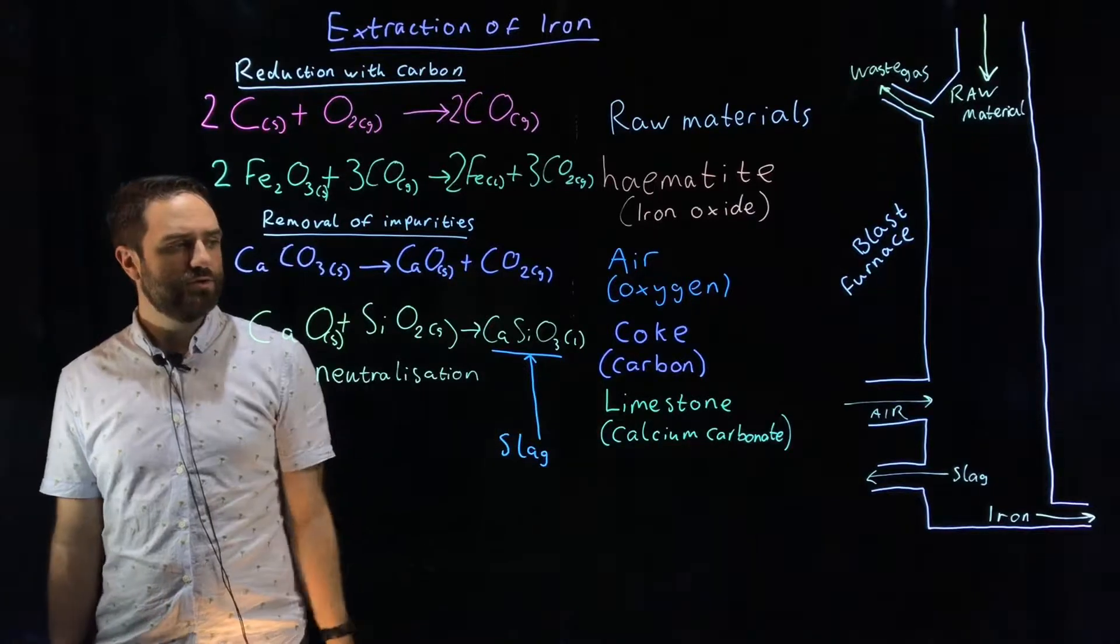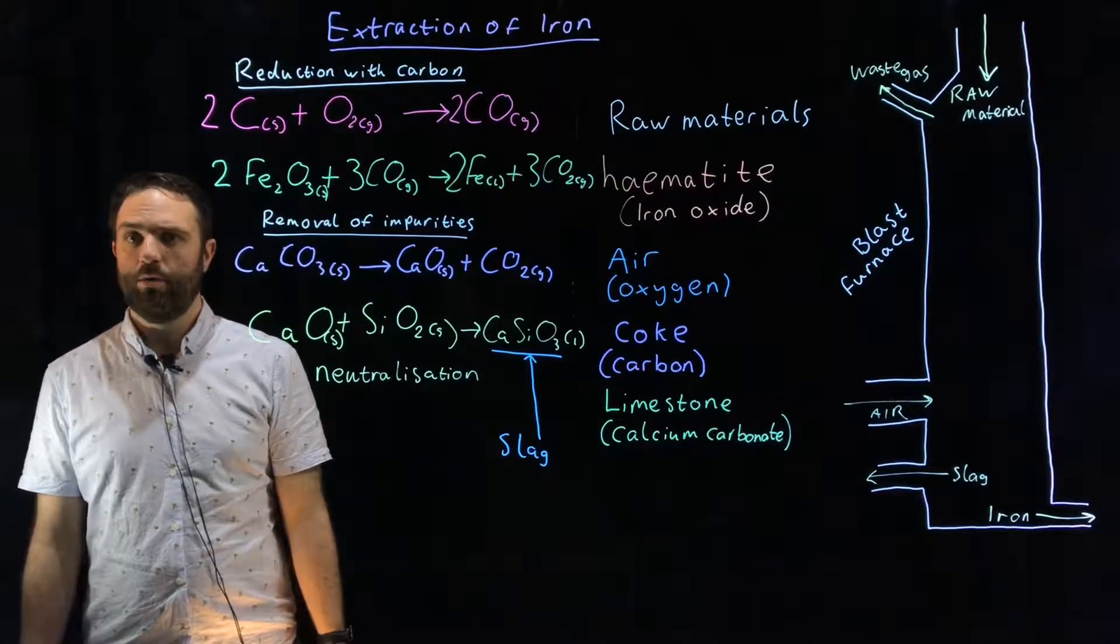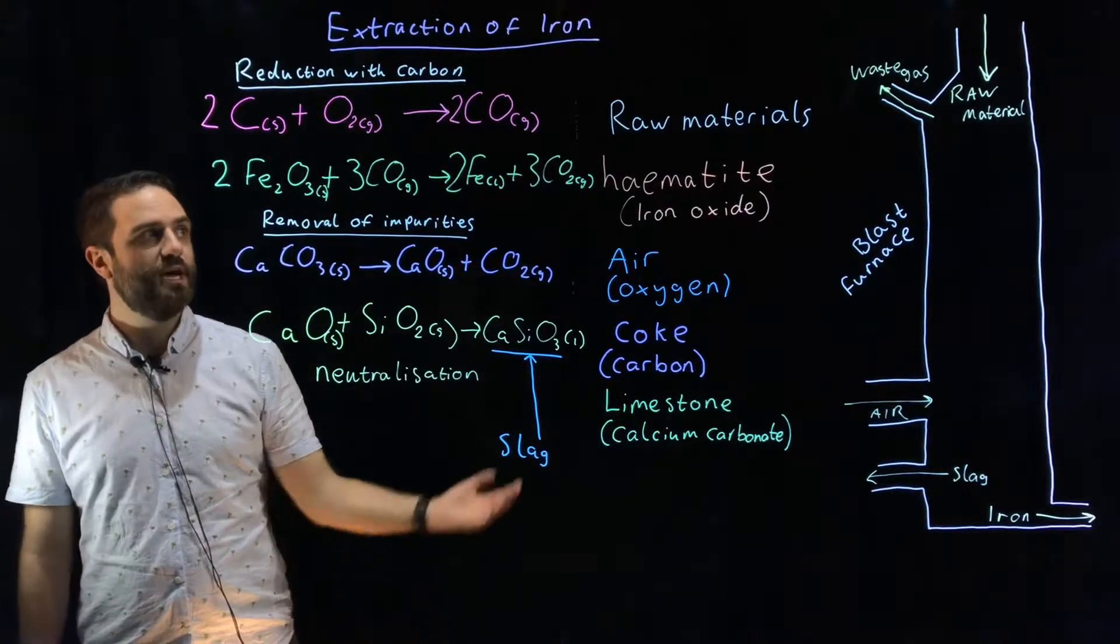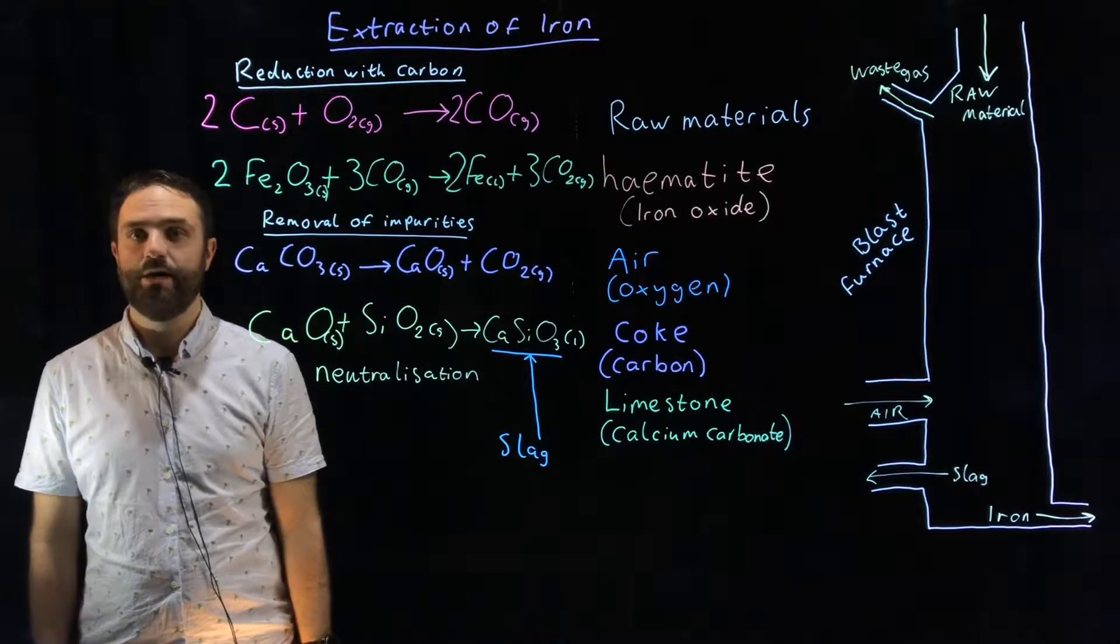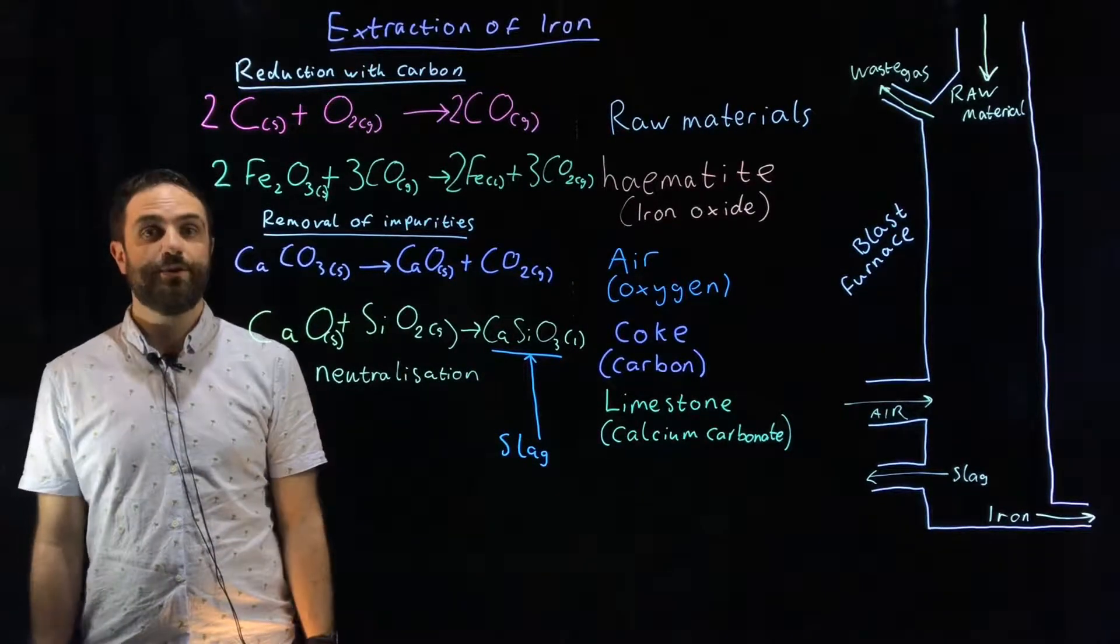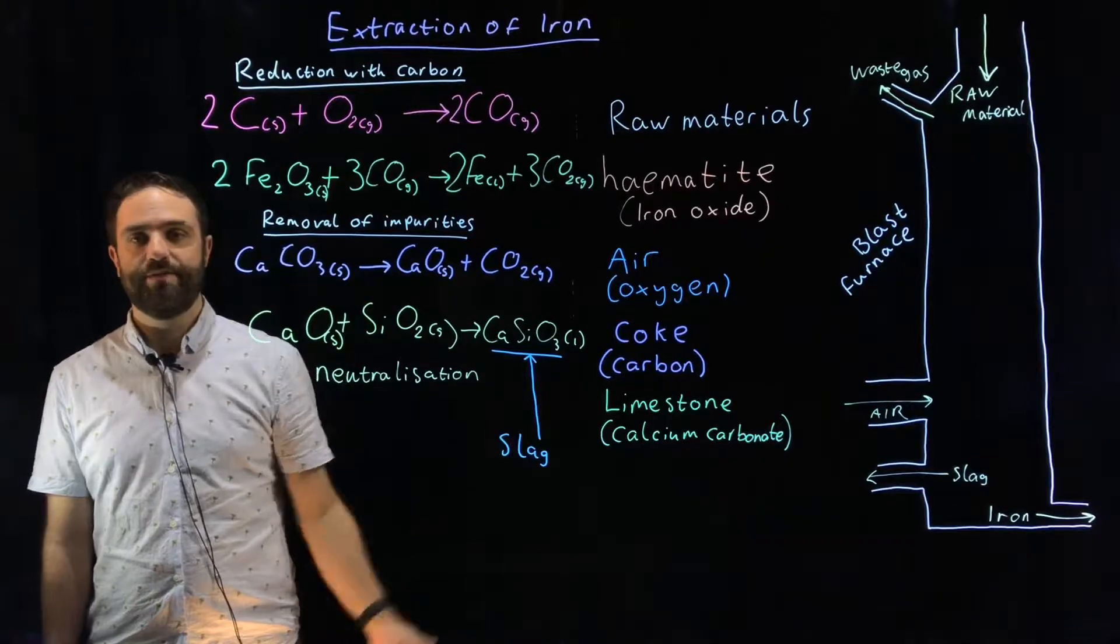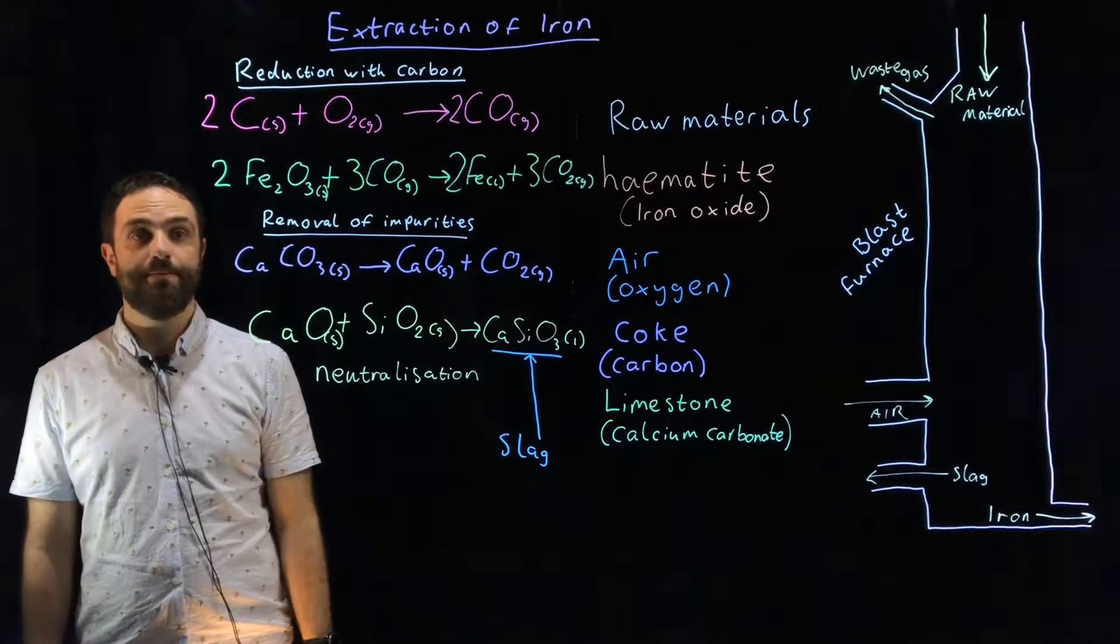Then we actually also add some calcium carbonate. Why do we do that? Because hematite is not pure iron oxide. It has some impurities in it and the purpose of the limestone is to remove those impurities.